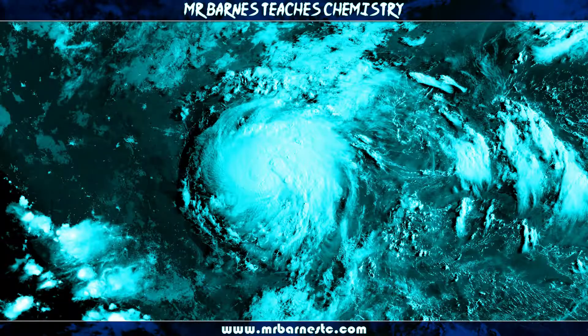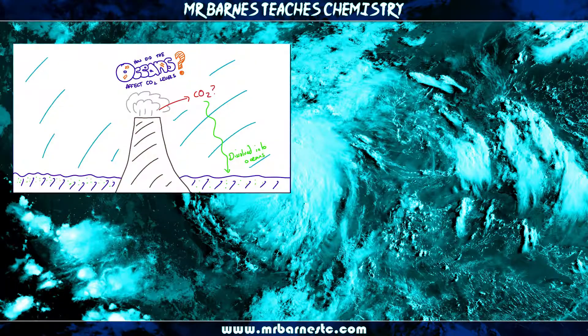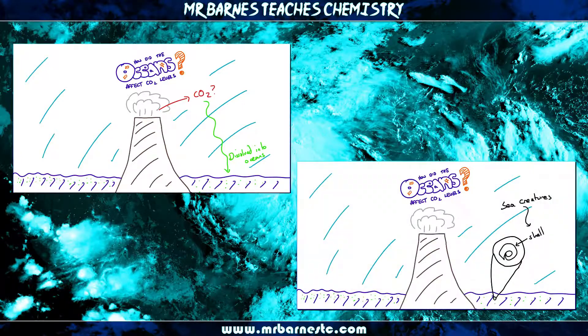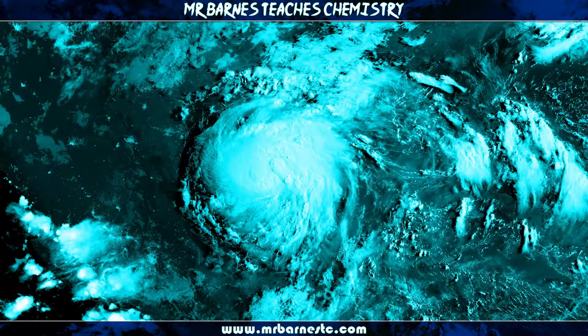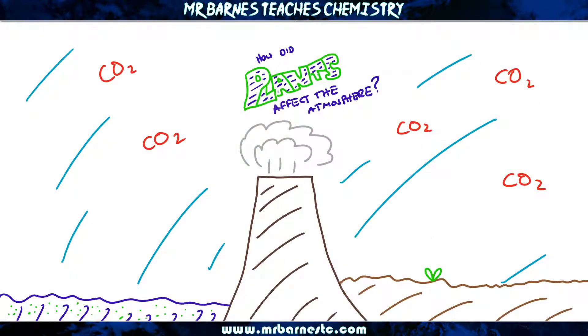You now know that carbon dioxide disappeared when it was dissolved into the oceans and trapped in the shells of sea creatures. There was another way that carbon dioxide levels dropped though, and that is the production of plants.